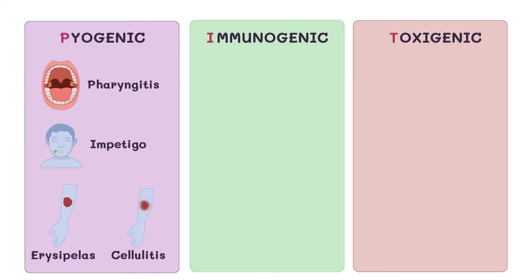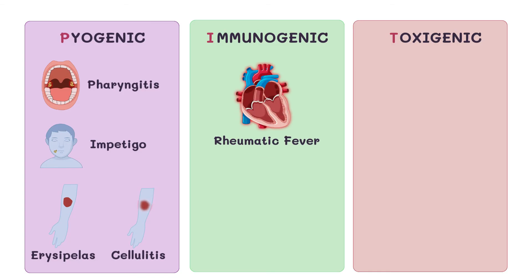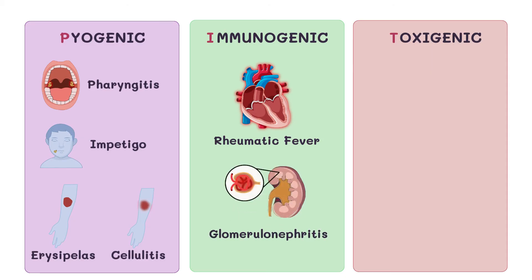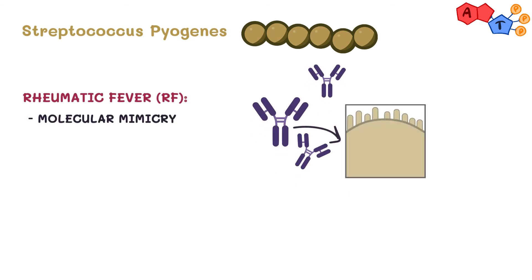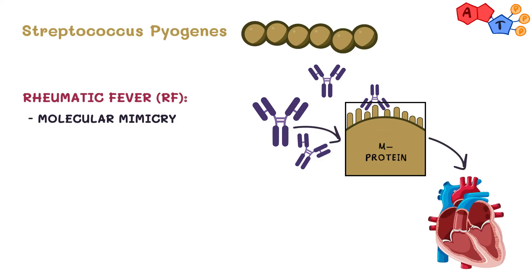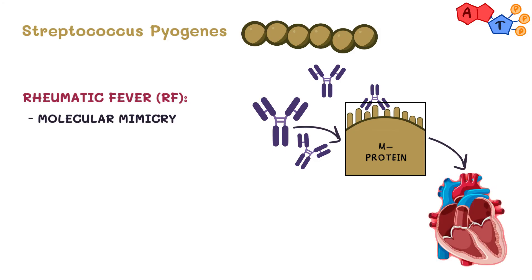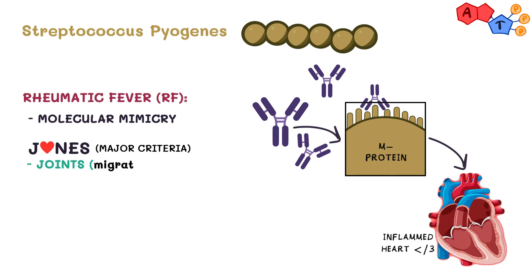Going back to the PIT, the second category is immunogenic, which includes rheumatic fever and glomerulonephritis. Rheumatic fever happens due to molecular mimicry: antibodies against the M protein of Streptococcus pyogenes are produced, which can also attack cardiac proteins such as myosin, leading to rheumatic fever. To diagnose it, we use the Jones criteria — J for joints, in the form of migratory polyarthritis.